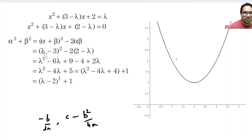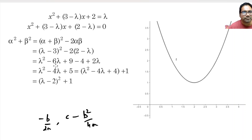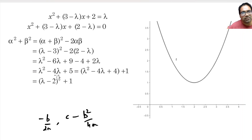So this becomes (λ minus 3) whole squared minus 2 times (2 minus λ). Expanding using a squared minus 2ab plus b squared: λ squared minus 6λ plus 9 minus 4 plus 2λ. Collecting terms: λ squared plus (−6 + 2)λ plus (9 − 4), which gives us λ squared minus 4λ plus 5.